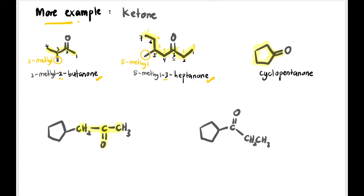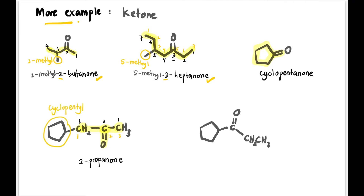Next example: one, two, three carbons as the parent, and the carbonyl is at carbon two, so the parent name is 2-propanone. Now checking numbering — the substituent cyclopentyl is at carbon three using yellow numbering, or carbon one using black numbering. We prefer the lower number, so: 1-cyclopentyl-2-propanone is the full name.